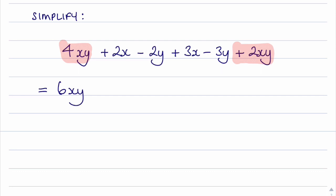Now we try and spot any other like terms. We have an x term here and also an x term here, and 2x plus 3x is 5x. Finally we look at the y terms. We've got a negative 2y and a negative 3y, which would give us negative 5y.